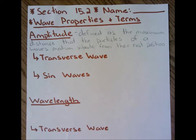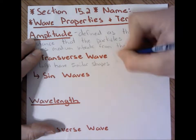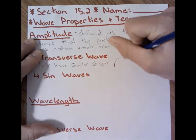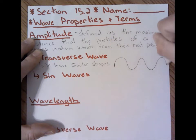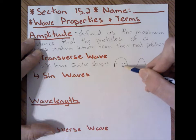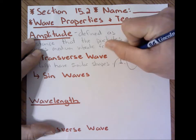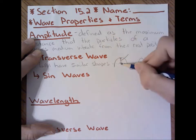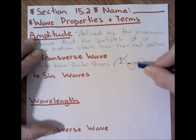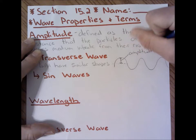A transverse wave, which I'll draw here in a second, has a shape that forms an almost sideways S shape. We have the up and down portions of the wave, and the amplitude — if you remember from section one — we drew that dotted line in the middle, and that's the particle's rest position. The amplitude on a transverse wave is the portion from rest to the crest, or vice versa, from the rest position to the trough.